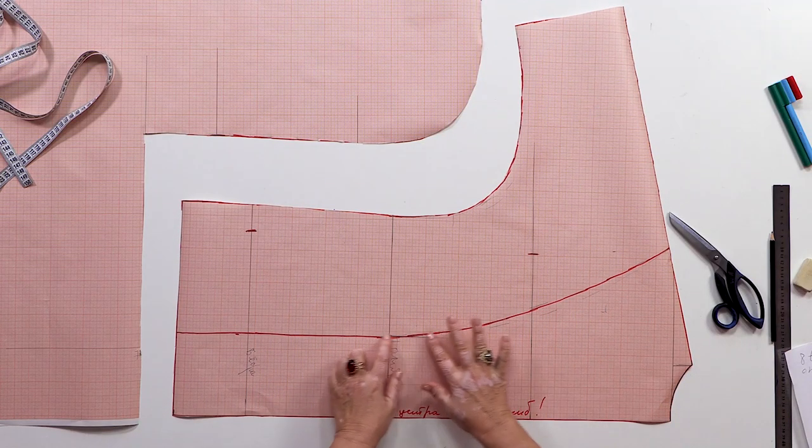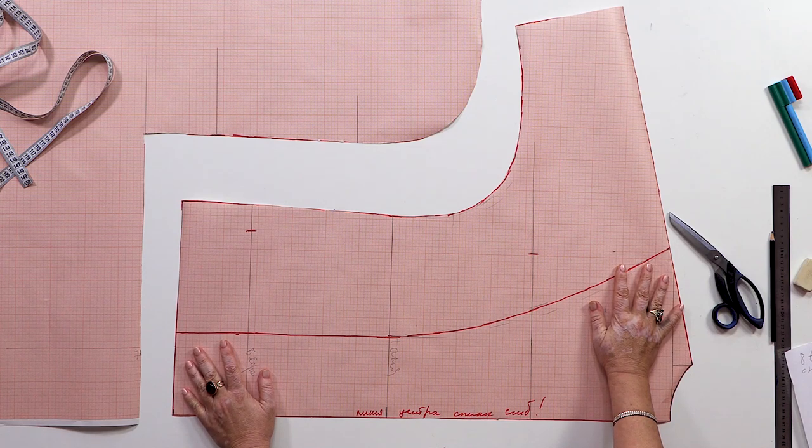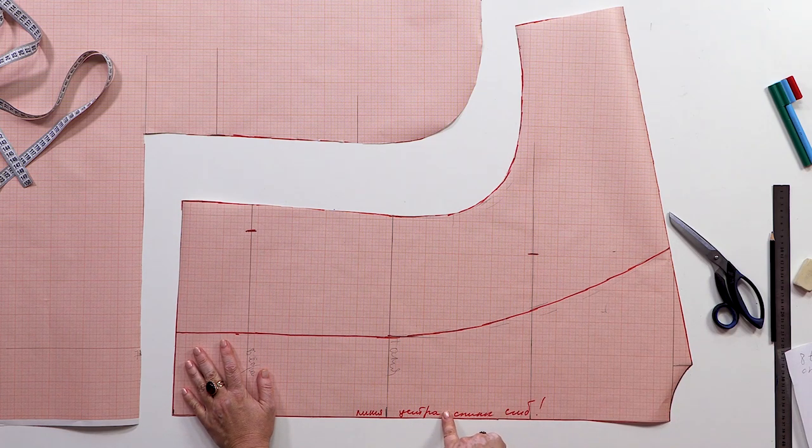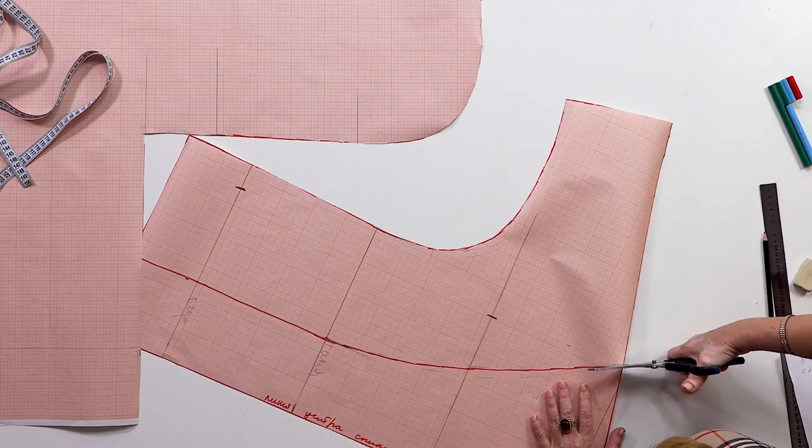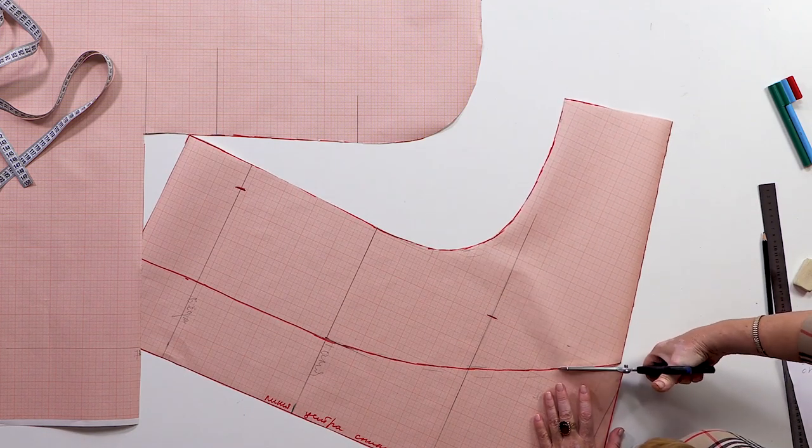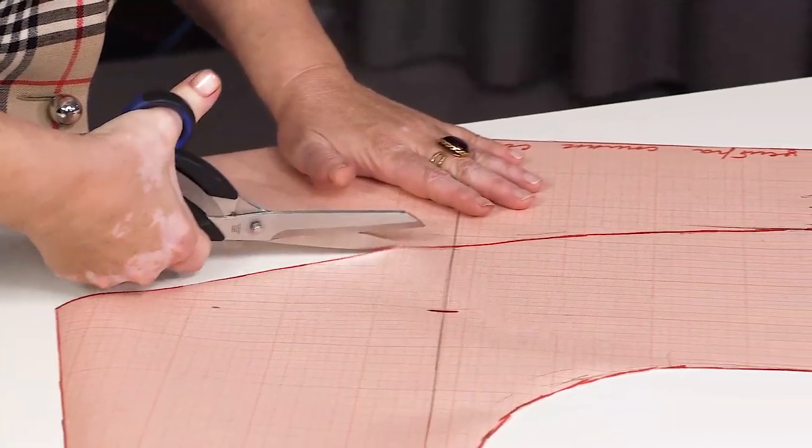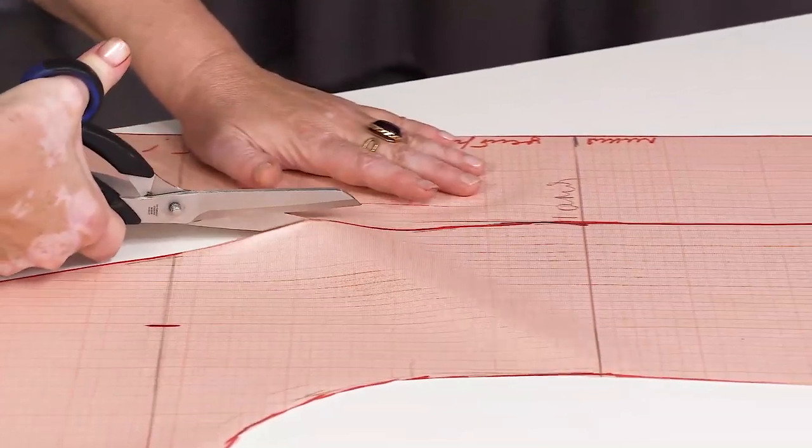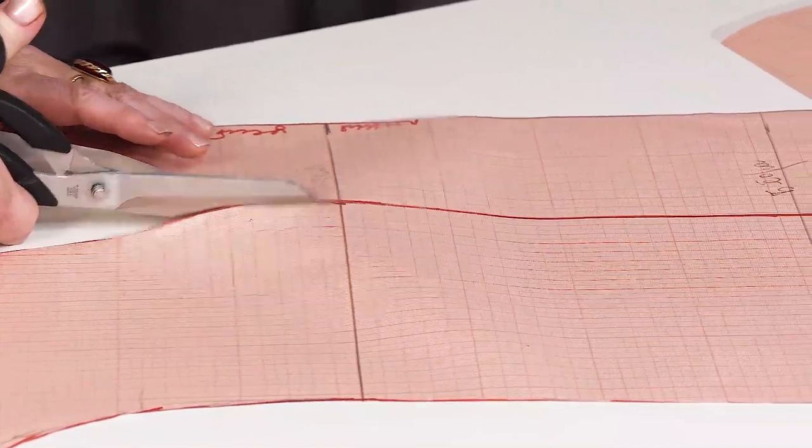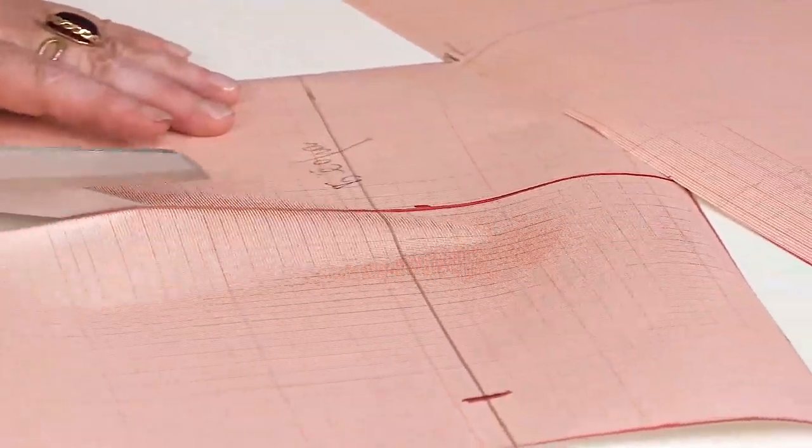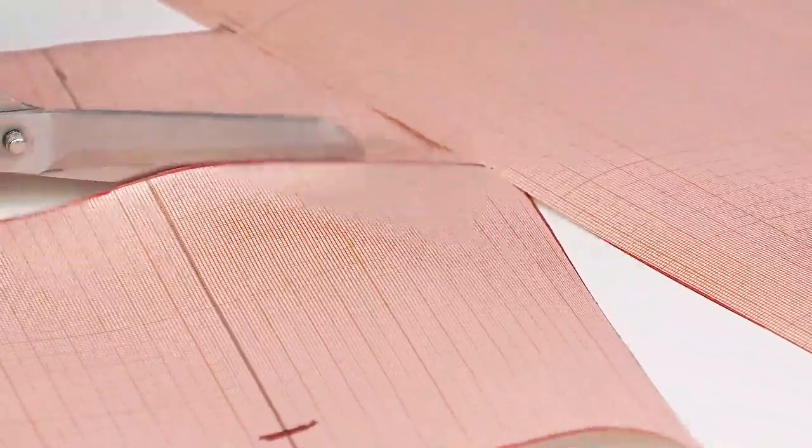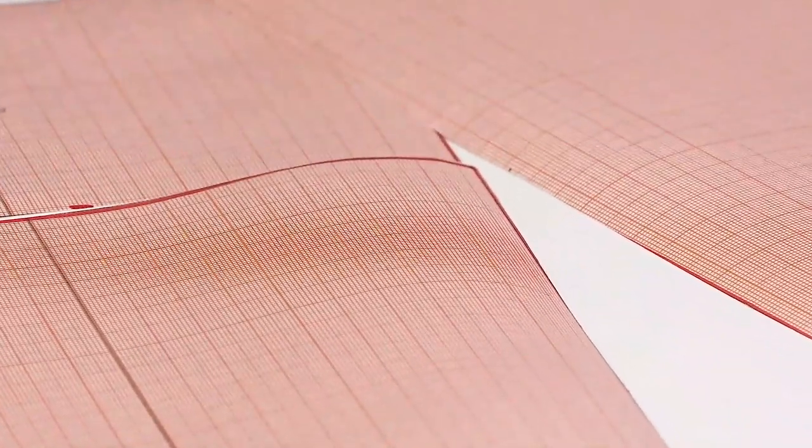So this is what the back looks like now. I need to cut the princess seam. This is the center back. And I'll show you how to make a pattern for the front.